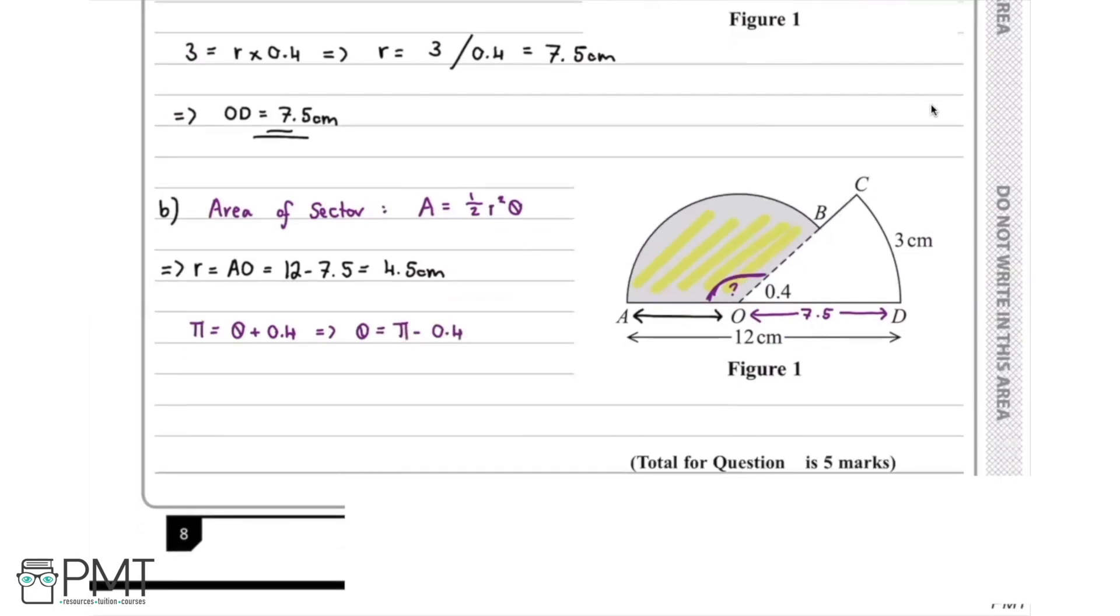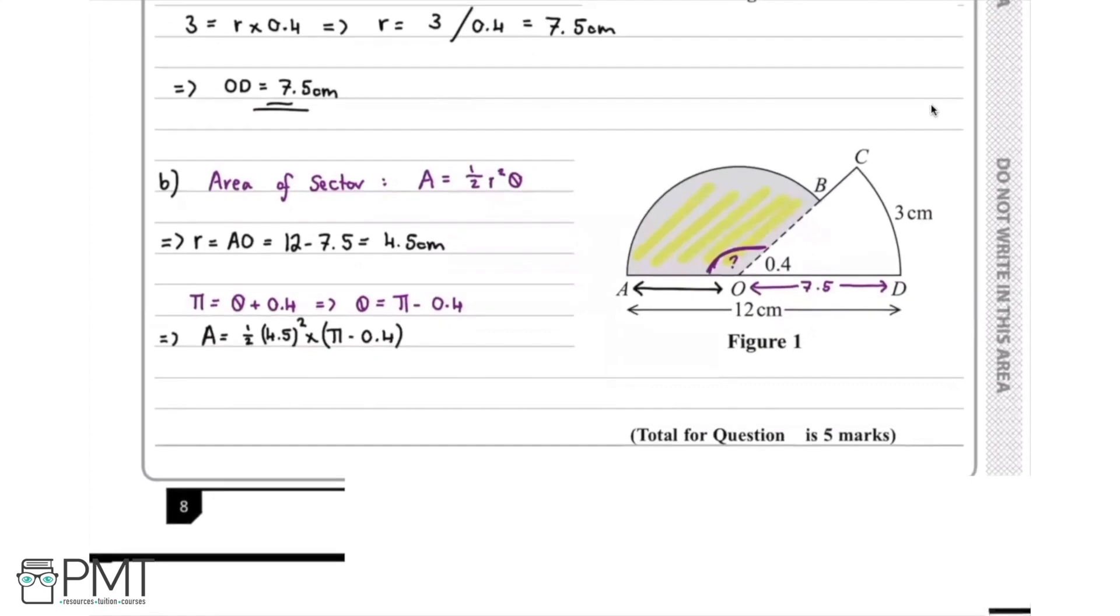This means that we have the values we need and we can substitute these into our formula. The area is going to be 1 over 2 multiplied by 4.5 squared, and then we're going to multiply this by pi minus 0.4. Remember to be careful with our brackets. This gives us that the area equals 27.8 centimeters squared, and we've got to be careful and remember our units, which are centimeters squared.